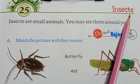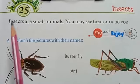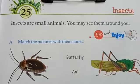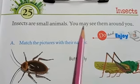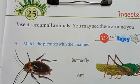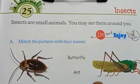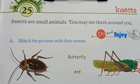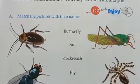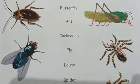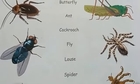The name of this chapter is Insects. Insects are small living beings — small animals. Some insects have wings with which they fly in the air, and most of the insects have six legs.